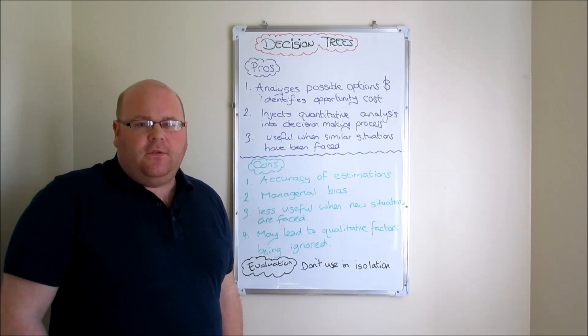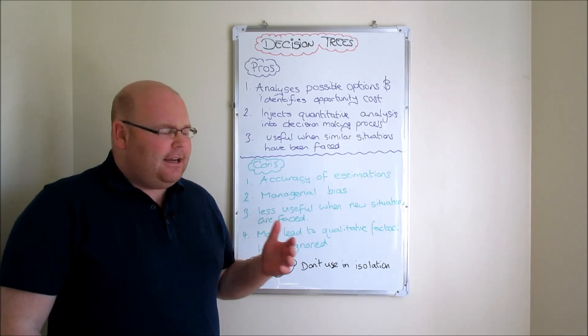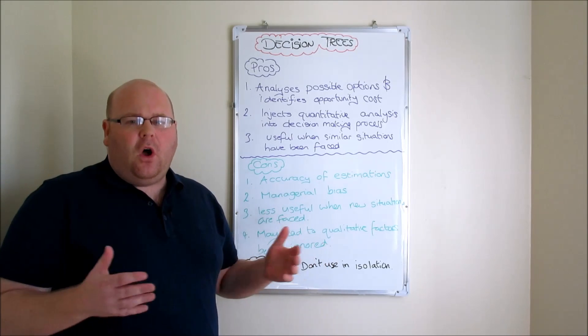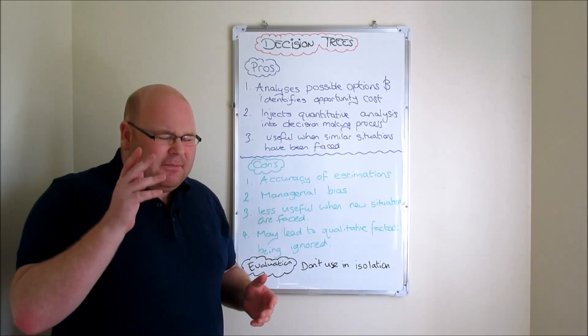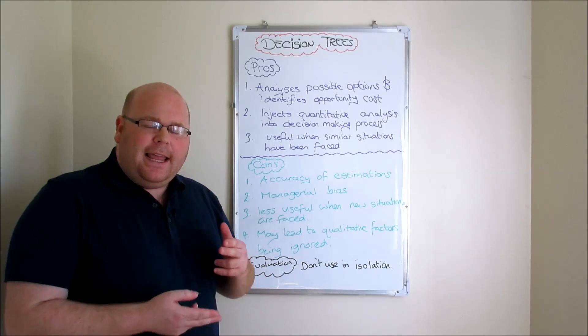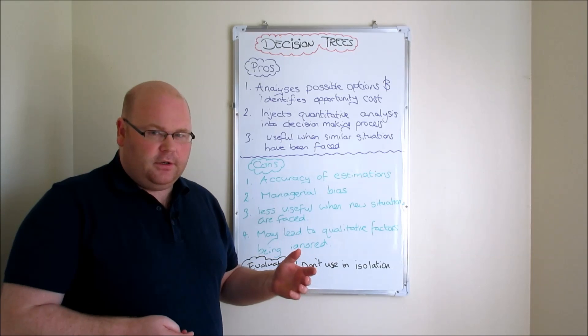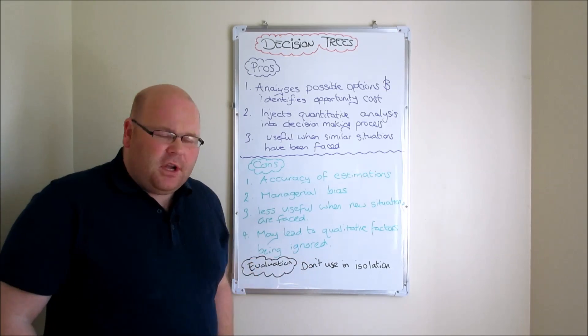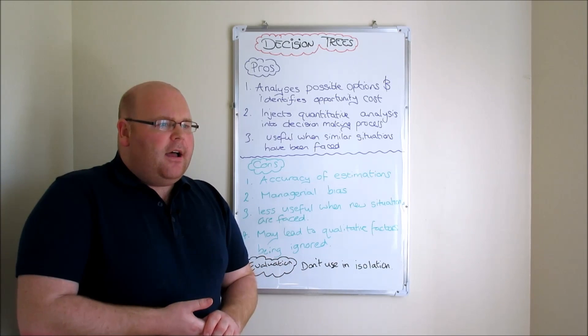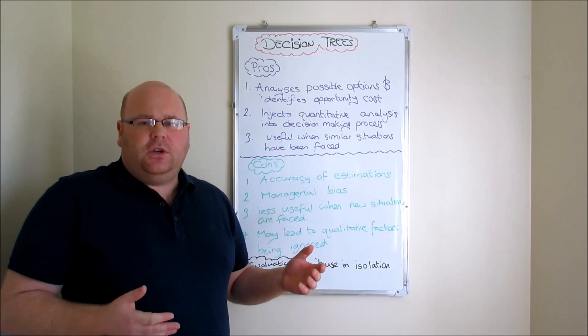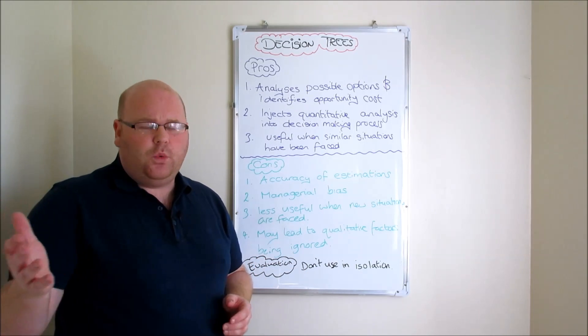We'll start with the pros. First of all, one of the big pros of decision trees is it forces managers into analyzing the different possible options that they could make, the different kinds of decisions that they could make. Perhaps most importantly it illustrates to managers the opportunity cost of a decision. For example, imagine we've got a firm - let's imagine it's Cadbury's and they are analyzing whether they should launch a new chocolate bar or whether they should launch a new sweet product.